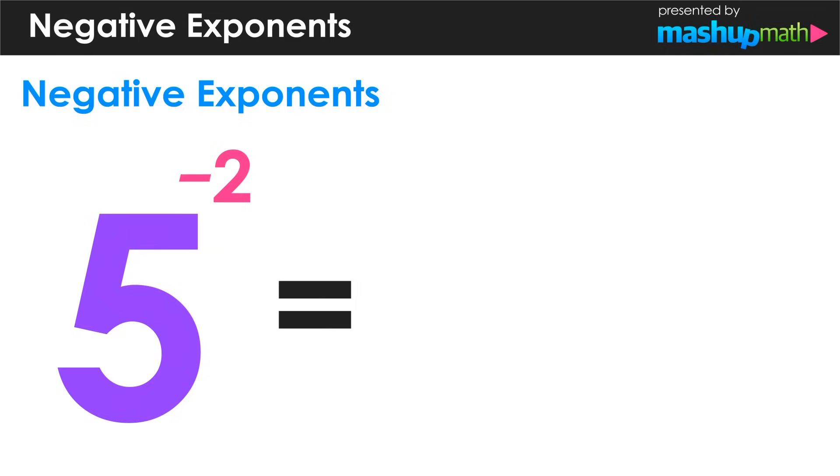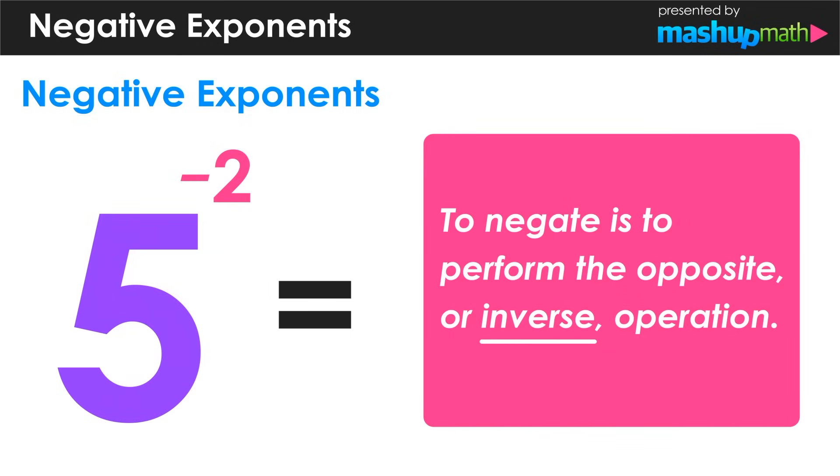But what if that exponent was a negative 2 instead of a positive 2? When we think of negative or the word negate, we think of it as performing the opposite or inverse operation.